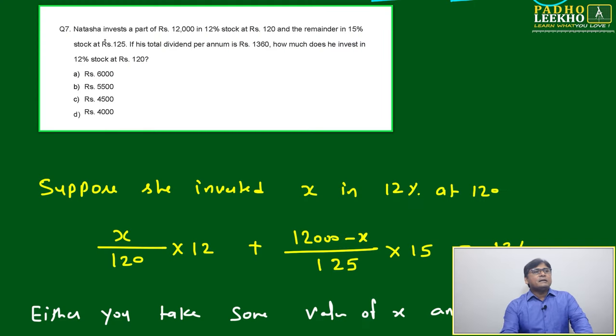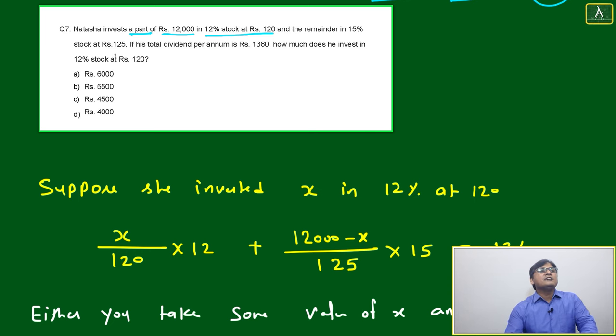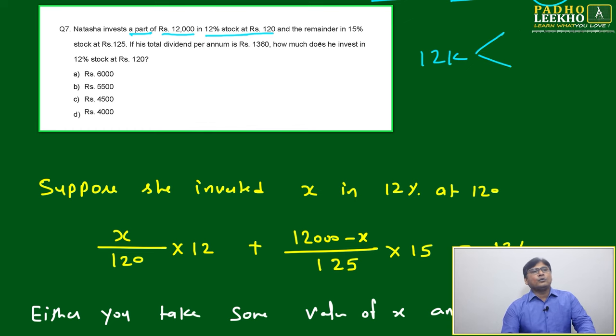Welcome to question number 7. This is based on stocks. Natasha invests a part of Rs. 12,000 in 12% stock at 120, and the remaining in 15% stock at 125. So 12,000 is divided into two parts: one is 12% at 120, another is 15% at 125.